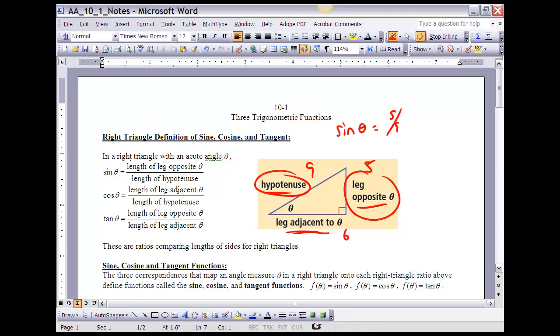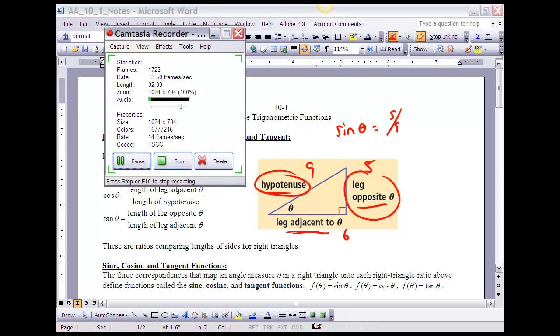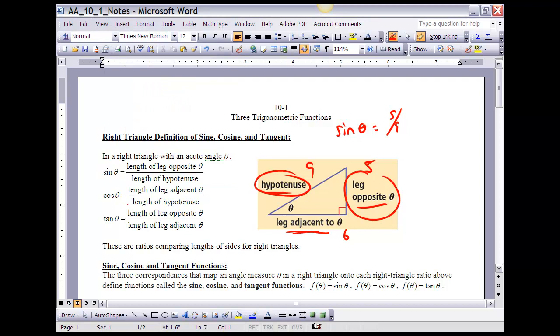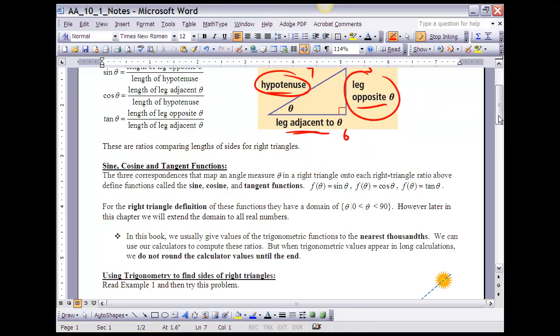These trigonometric ratios are dependent upon the angles, therefore we can think of them as being functions. So the sine, cosine, and tangent are functions of theta, where theta is the independent variable. We can write them as functions as well. So I could say f of theta is equal to the sine of theta, or f of theta is equal to the cosine of theta, or f of theta is equal to the tangent of theta. And when I say theta, all that is a Greek letter that stands for the measure of that acute angle that we're looking at.